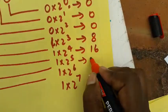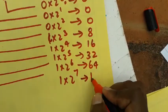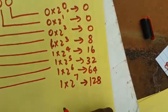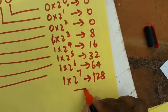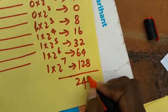Here it is thirty-two, here it is sixty-four, here it is one hundred twenty-eight. So addition of this full value, we will get it as two hundred forty-eight.